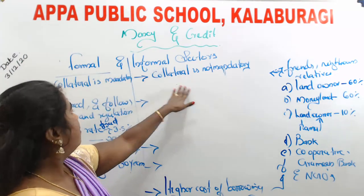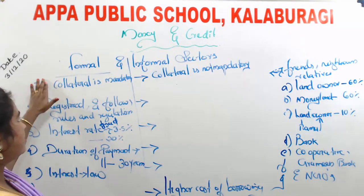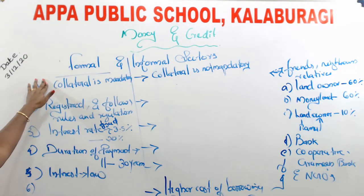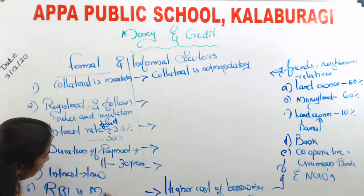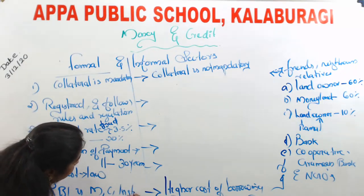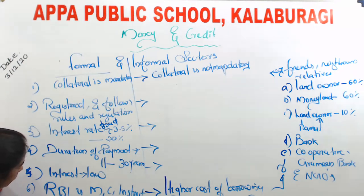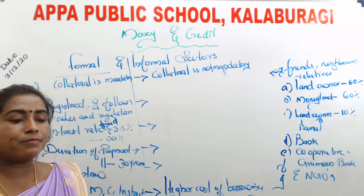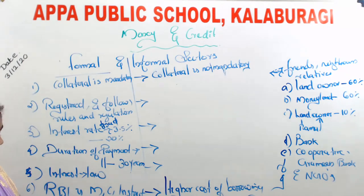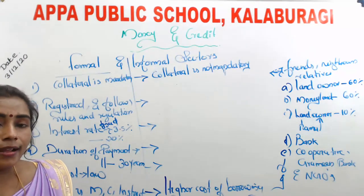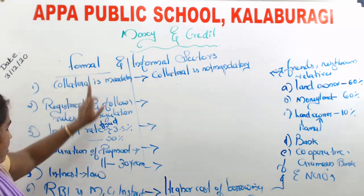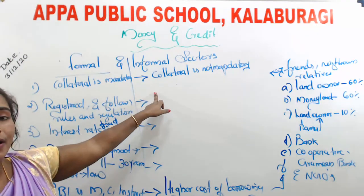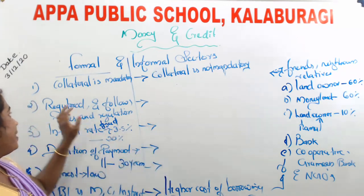Formal sector means the sector registered under the government, monitored by RBI — controlling, instructing, and supervising all banks regarding lending conditions, documentation requirements, and duration. Formal sectors are supervised by RBI, but such an organization is absent in the case of informal sectors. Collateral is mandatory in the formal sector; without collateral, the bank does not provide a loan.